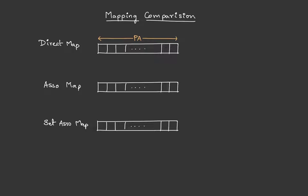We are done with the mapping techniques and before we move on to cache replacement, let's compare all the mappings. Let's start with direct mapping. When we know the physical address, the initial few bits (least significant) will be the block offset, the next few bits will be the cache index — that's basically the line number — and the remaining most significant bits will be the tag bits.